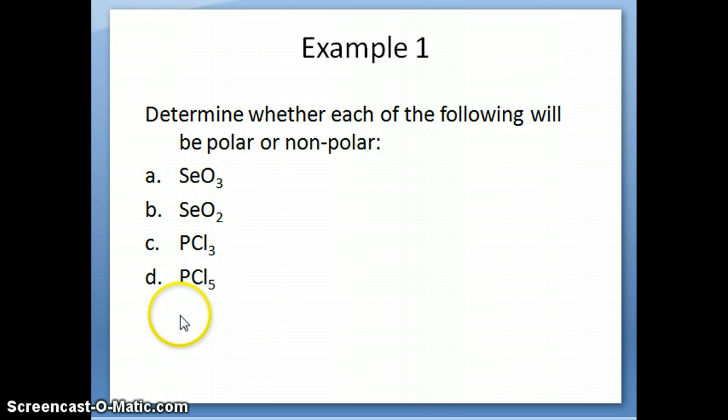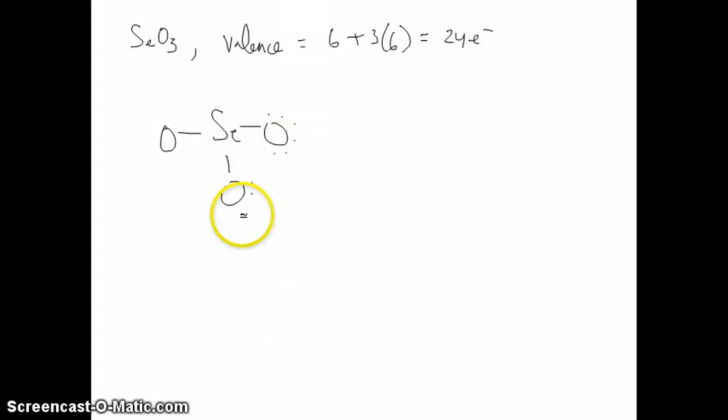Let's work through an example of using the polarity rules to help you predict molecular polarity. So we have four different molecules here. I'm going to work through a couple of them and then I'll leave a couple for you to work on and answer in the question. We'll start with SeO3. The first step is just to figure out the number of valence electrons because you have to draw a Lewis structure. So Se is in group 6, so there's 6 electrons there plus all the oxygens. There's 3 oxygens, each of them has 6, so a total of 24 electrons.